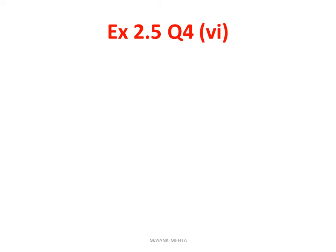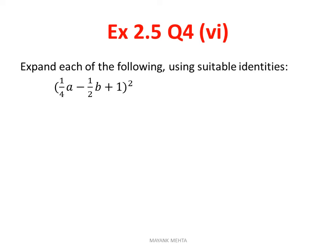Now question 4 part 6 of 2.4 I have taken. Expand each of the following using suitable identity. Pay special attention to this sum. (1/4a - 1/2b + 1)². This has fractions, that's why looking at the question you might feel a bit scared. But there is nothing to be afraid of. If you apply the identity correctly, you can easily do it.